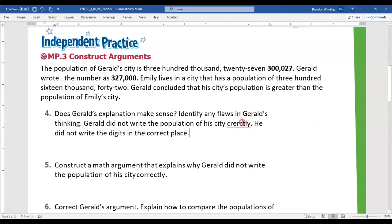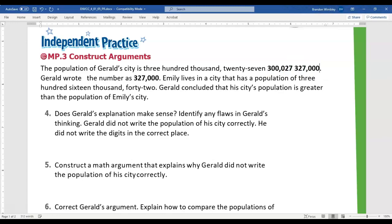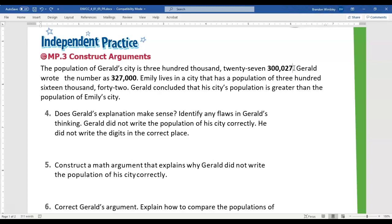What I think Gerald was trying to do was he thought his number was actually this: 327,000. In which case, he would have been correct. But that isn't really his number.